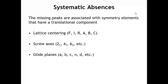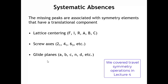The answer is not quite. The only symmetry elements that lead to systematic absences or specific reflection conditions are those that have a translational symmetry component. That means all kinds of lattice centering — face centering, body centering, base centering — those all lead to certain systematic absences. And then the translational symmetry operations — the screw axes and the glide planes — those have a translational component and both types of symmetry elements lead to missing reflections.